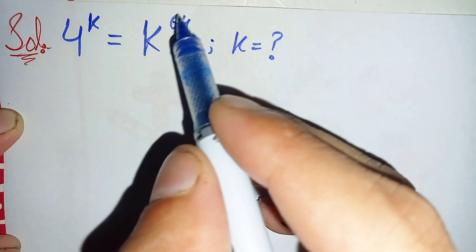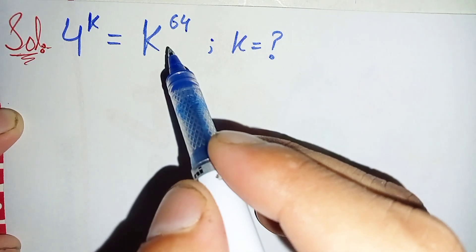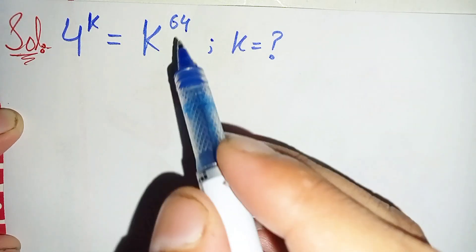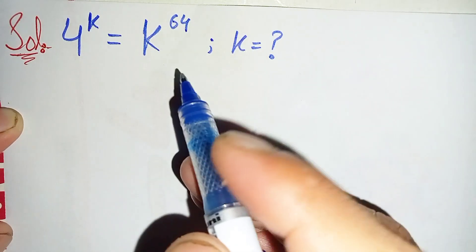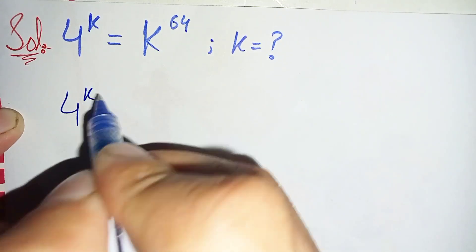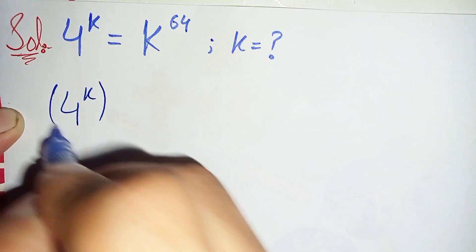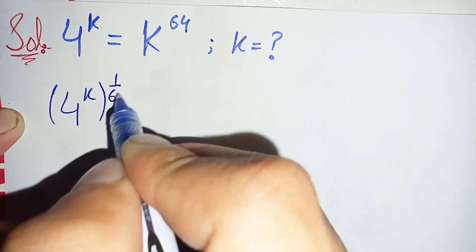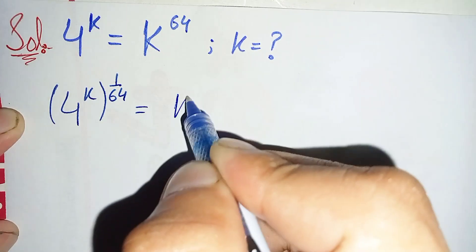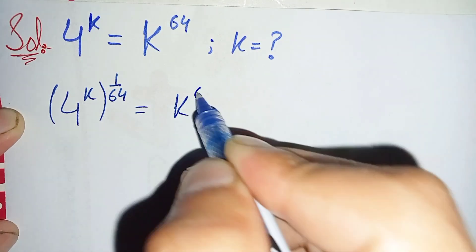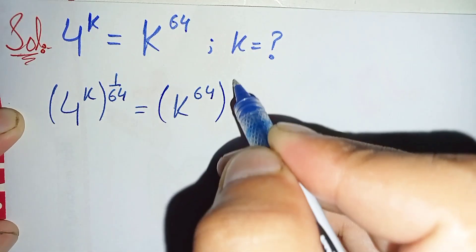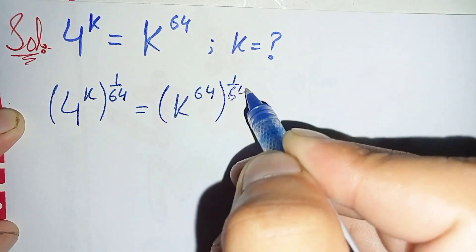First of all, we will try to eliminate this power 64 from the right hand side. To eliminate this power, we will take 1 over 64 in the power on both sides. So 4 raised to power k, all raised to power 1 over 64, is equal to k raised to power 64, all raised to power 1 over 64.